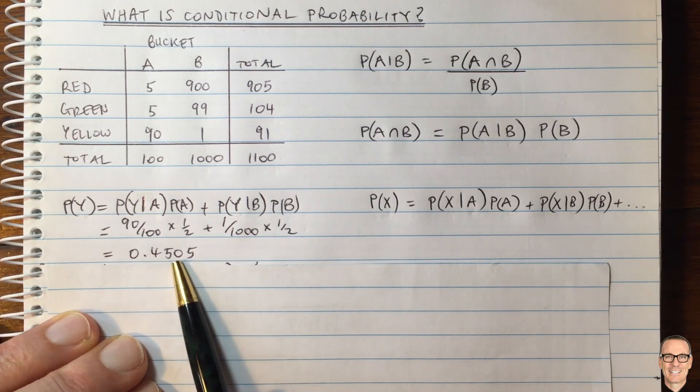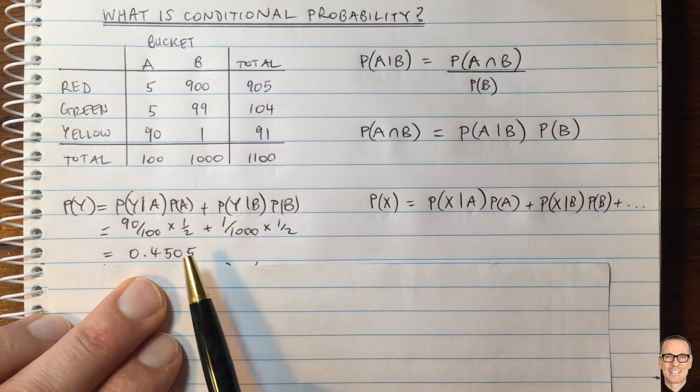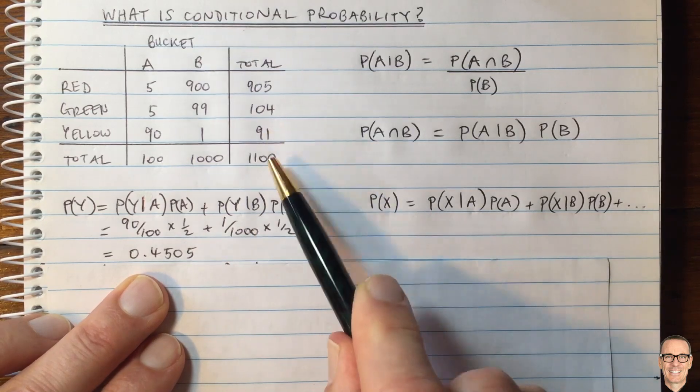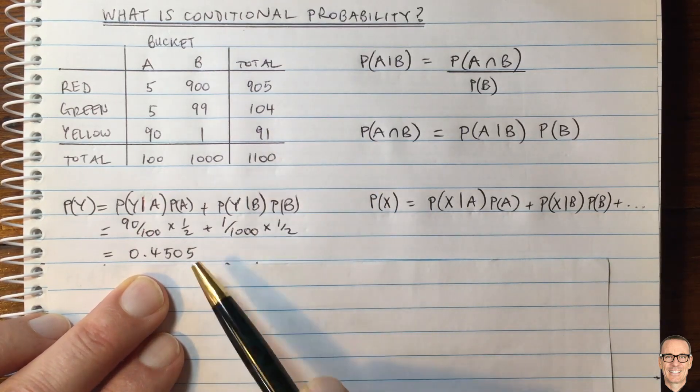And that is almost 45%, as we said intuitively, we thought it might be 45%, not 91 out of 1100.